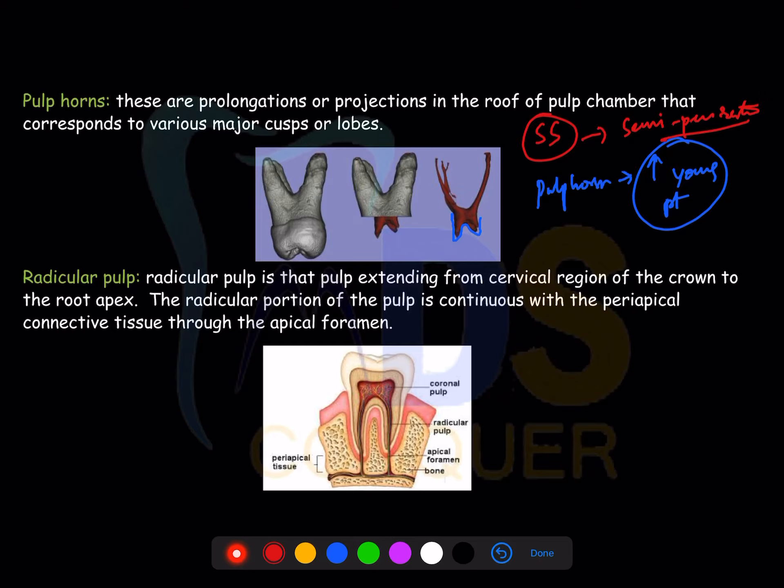The radicular portion of the pulp is present from the root canal orifice to the apical foramen — this is called the radicular pulp. Pulp is a tissue with a main issue: pulpal pain is one of the highest intensity pains. The first pain a human experiences is during birth, and the second is pulpal pain.